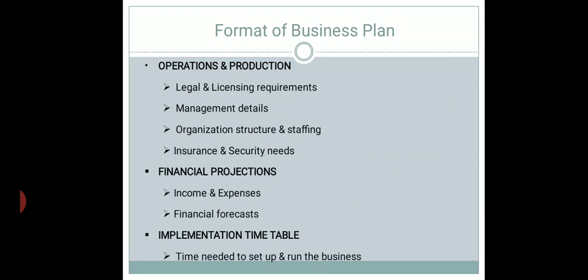Under operations and production, legal and licensing requirements should be clear — what kind of license you need and the laws under which your company operates. Management details should include what organizational structure you will follow, how staffing will be done, and what the insurance and security needs of your organization are.